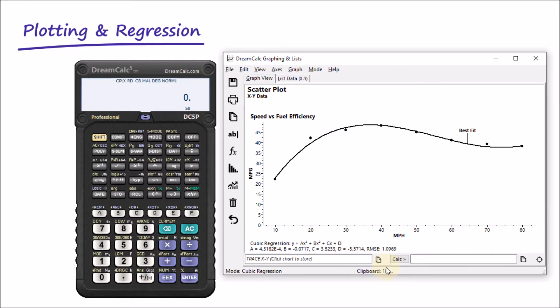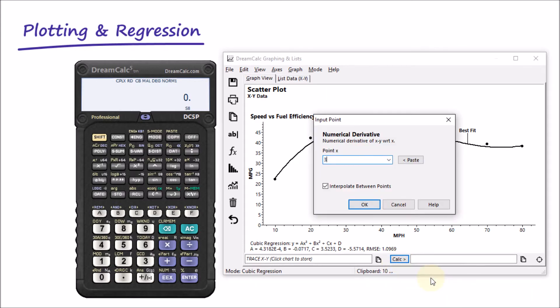We can also perform basic calculus on the data shown using the calculus button on the bottom right. For example, let's find the rate of change of efficiency at 35 miles per hour: 0.2.